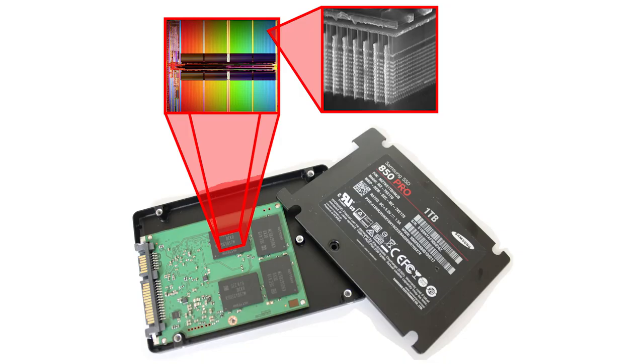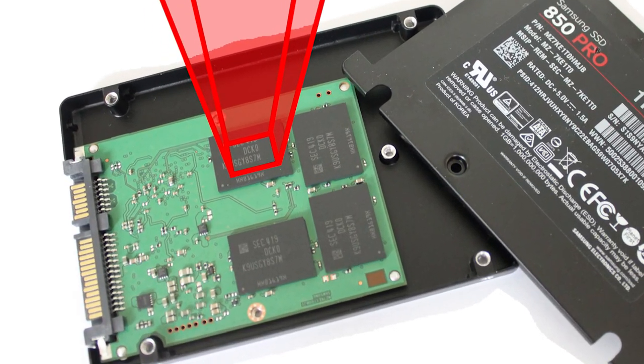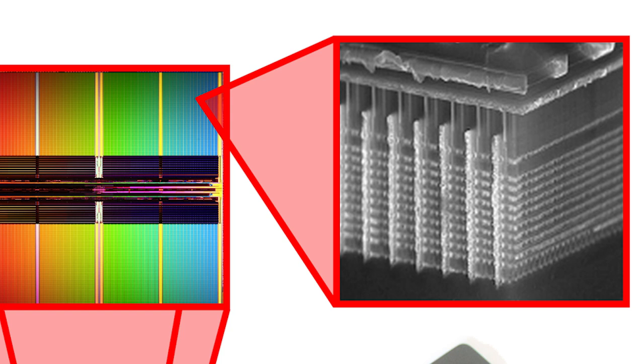Here we can see inside a Samsung 850 Pro SSD. The black packages on the green board contain the flash memory chips, which are expanded above. Each flash memory chip contains billions of memory cells. You can see a 3D stack of a few thousand if we zoom in on a small section.